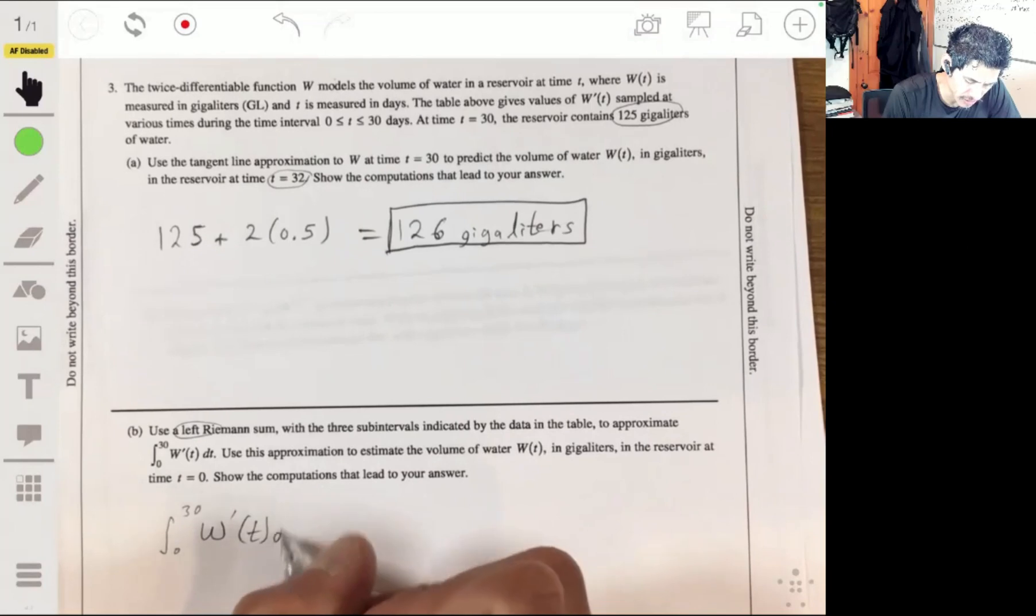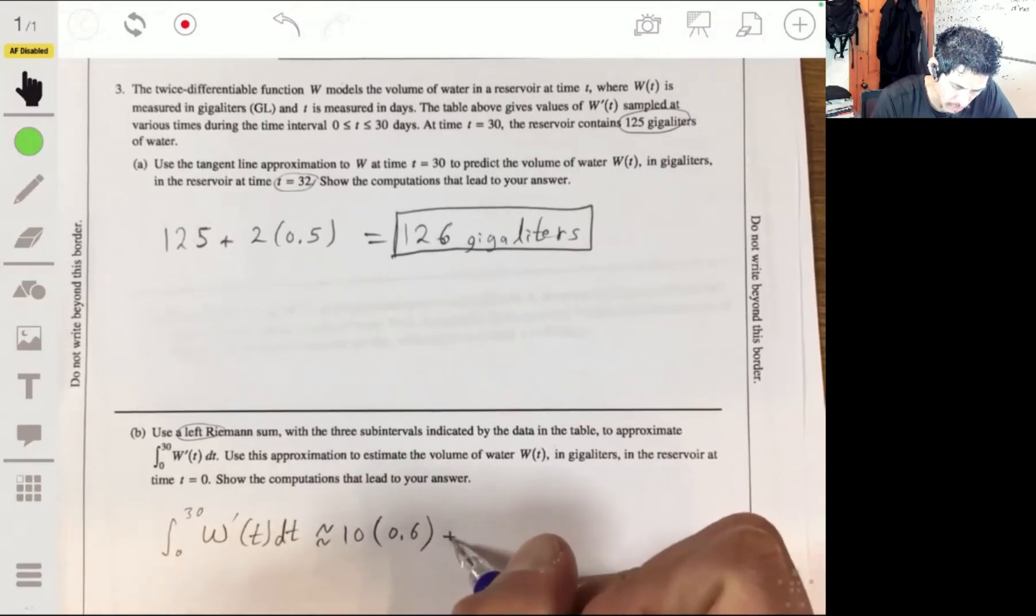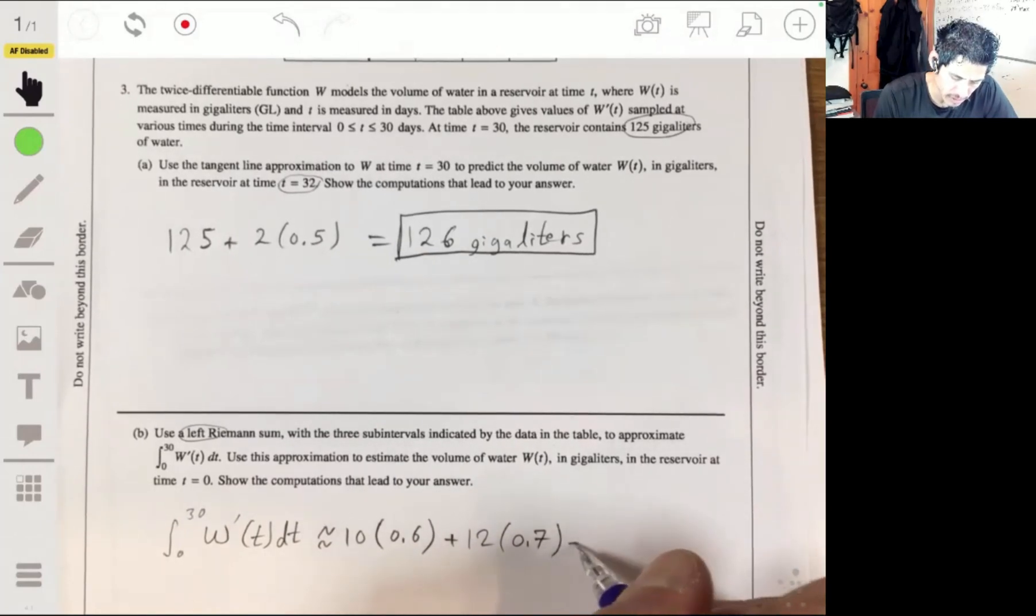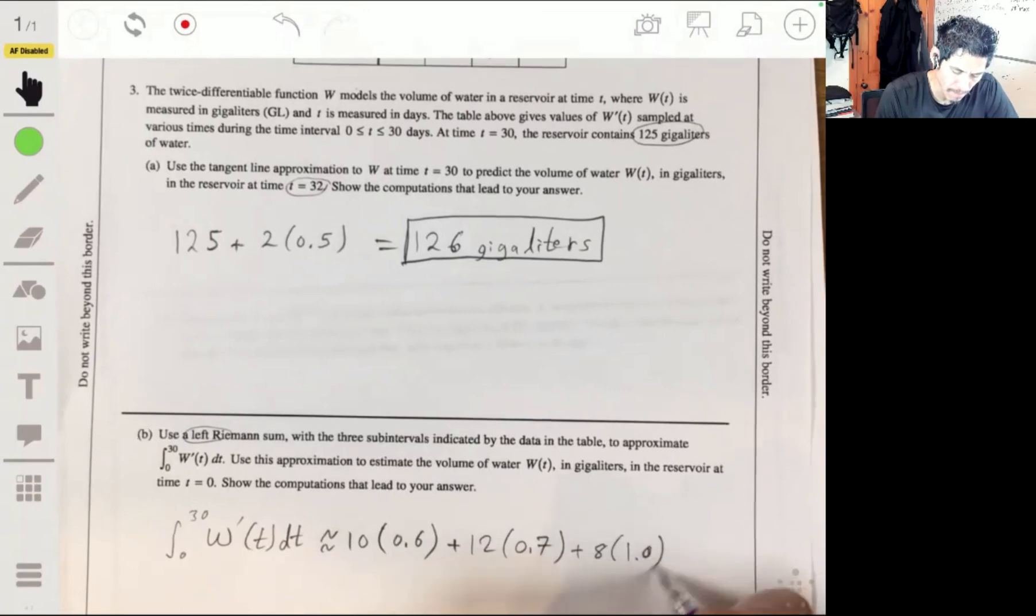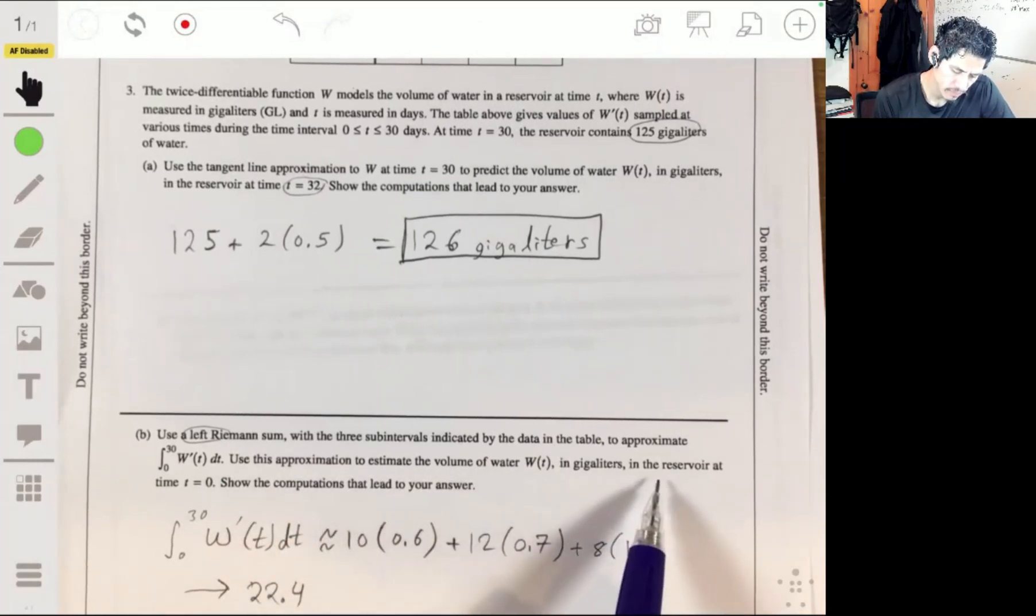And so then we can set up this integral. W prime of t dt will be approximately equal to 10 times 0.6 plus 12 times 0.7 plus 8 times 1.0. That should give us, like, 6, 12, 22.4.